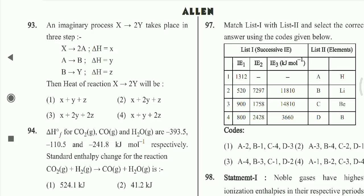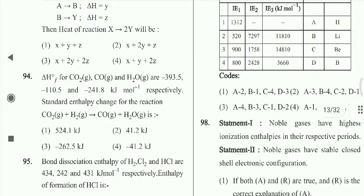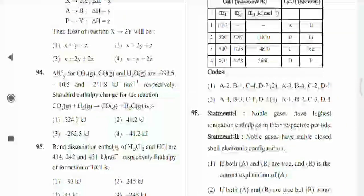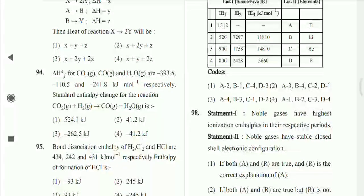Question 94: An imaginary process X → 2Y takes place in three steps involving X, 2Y, and 2Z — option 3rd is correct. Delta Hf for CO₂(g) and H₂O(g) with given values — solving gives the standard enthalpy change as 14.41 kJ. Option 2nd is correct.